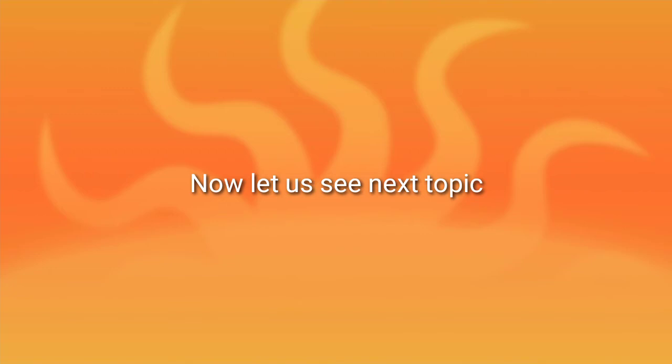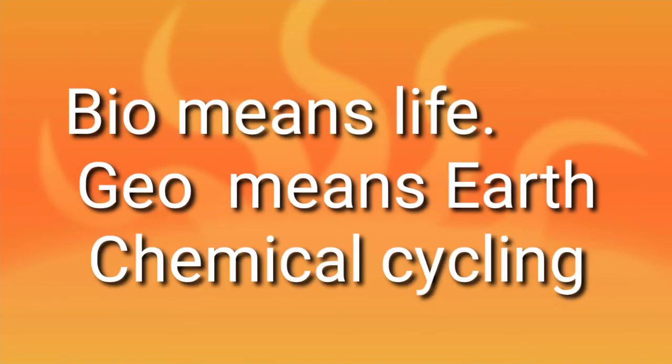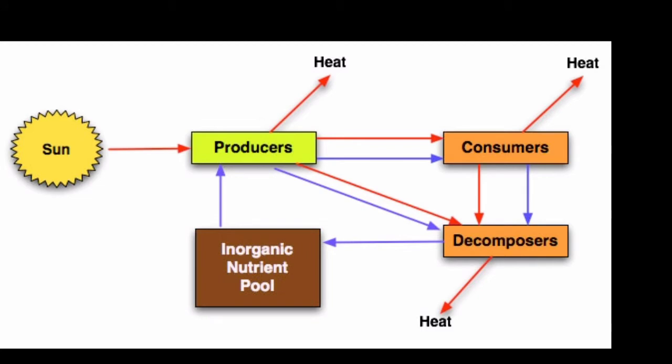Now let us see our next topic which we are going to deal with today: the biogeochemical cycle. This is the cycle in which 'bio' means life, 'geo' means earth or land, and 'chemical cycling' is the procedure we are going to observe now. The flow of nutrients in an ecosystem is cyclic. All organisms need nutrients for their growth. These nutrients are continuously transferred from biotic to abiotic and from abiotic to biotic factors within an ecosystem. This cycle operates continuously through the medium of the biosphere, which is formed by the lithosphere, atmosphere, and hydrosphere.